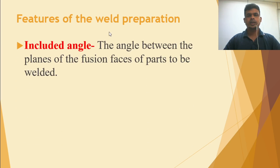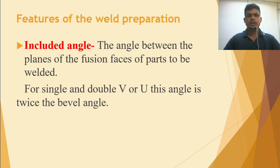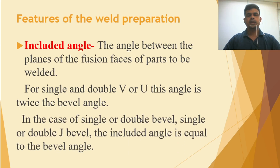What is the included angle? It is the angle between the planes of the fusion faces of the parts to be welded. When two bevel angles are combined together, this forms the included angle. For single and double V or U joints, the included angle is twice the bevel angle. For single or double bevel or J joints, the included angle is equal to the bevel angle.